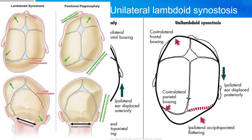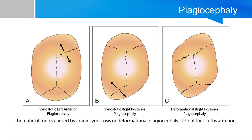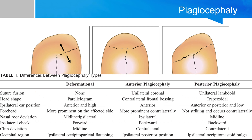The importance of the distinction between the two entities is because their treatment modalities differ. The treatment for lambdoid synostosis is surgery, while the treatment for positional plagiocephaly is usually conservative with positional therapy or molding helmets. Here's a summary of the different types of plagiocephaly in the table below — make sure you know the differences, as the board exam will commonly ask you to identify the types of cranial synostosis.